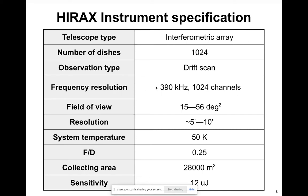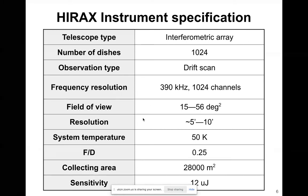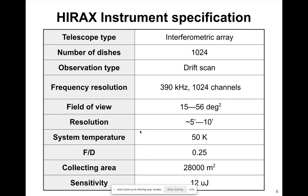The field of view we're looking at is 15 to 56 degrees squared, and the resolution is 5 to 10 arcminutes. The system temperature we plan to achieve is 50 Kelvins, and our focal ratio is 0.25.